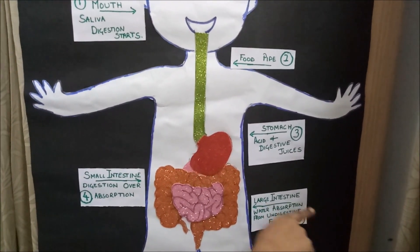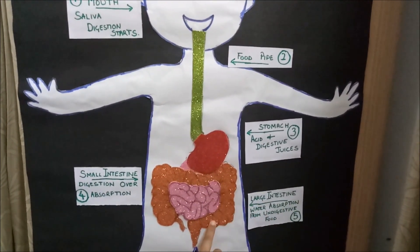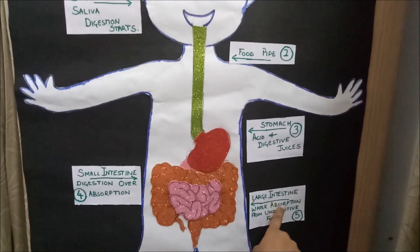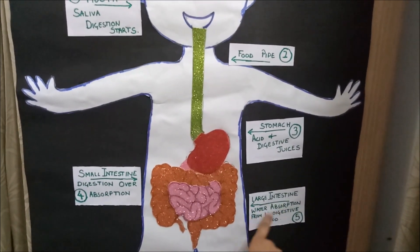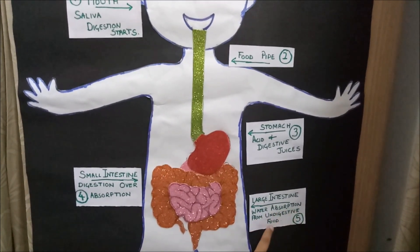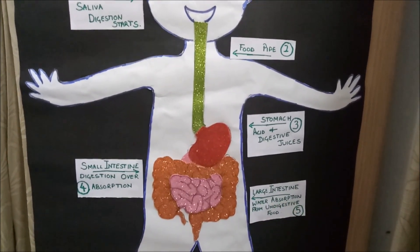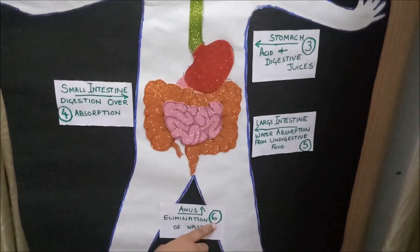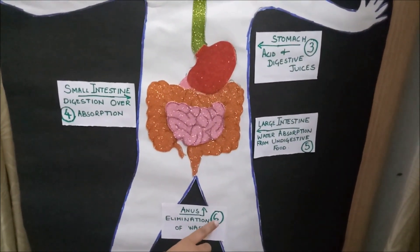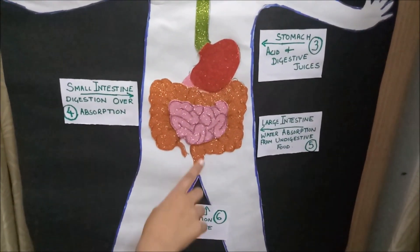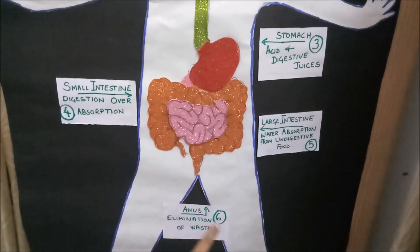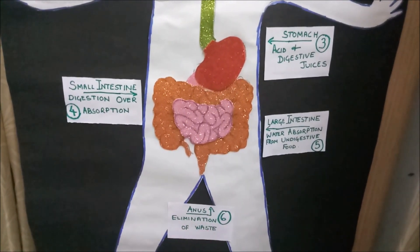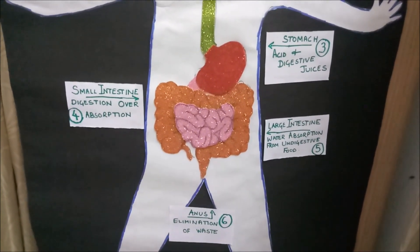Fifth, Large Intestine — Water Absorption from Undigested Food. Sixth, Anus — Elimination of Waste Food Matter.